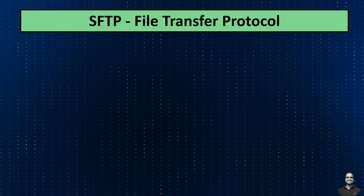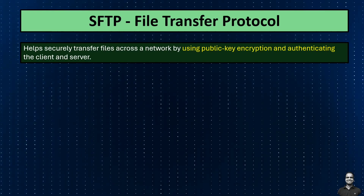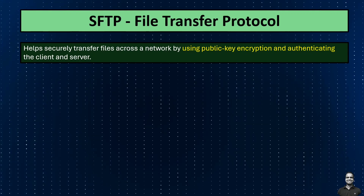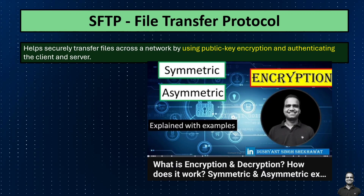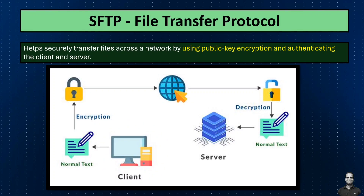First on the list is SFTP — Secure File Transfer Protocol — which helps securely transfer files across a network by using public key encryption and authenticating both the client and the server. SFTP is similar to FTP but ensures the security of your files. For example, suppose your company needs to securely transmit sensitive financial documents from headquarters to a regional office. You would use SFTP to ensure the files are encrypted during transit and that both parties are authenticated, reducing the risk of unauthorized access.